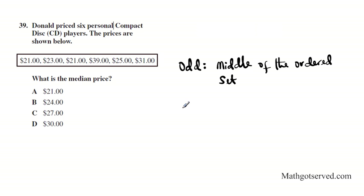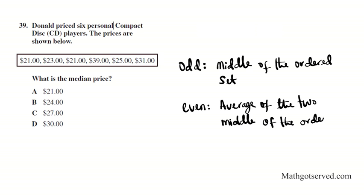If you have an even set of data, the median is going to be the average of the two middle of the ordered set. You notice that in both cases, you must order the set, the set must be ordered either in ascending or descending order. It doesn't matter the way you order it.